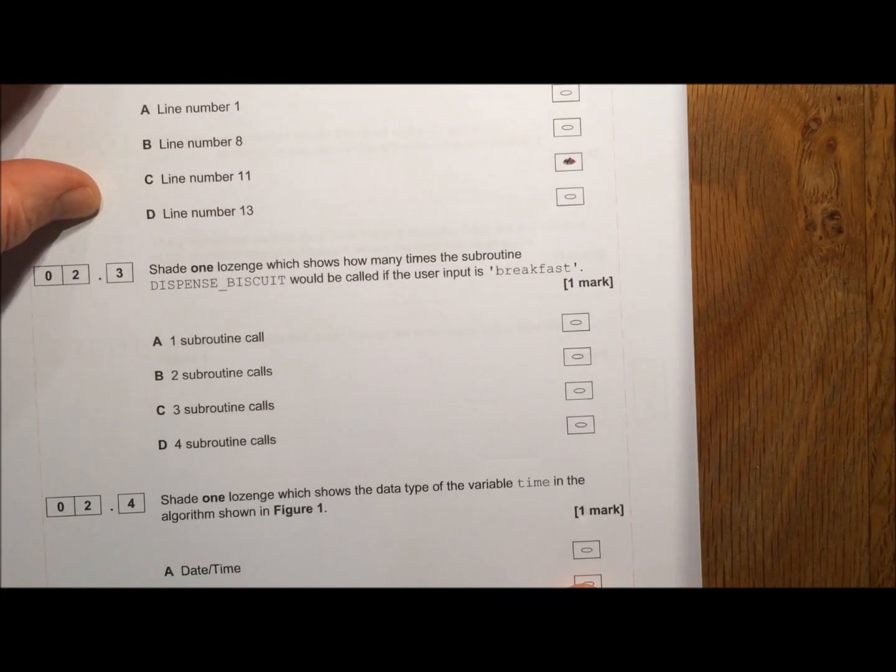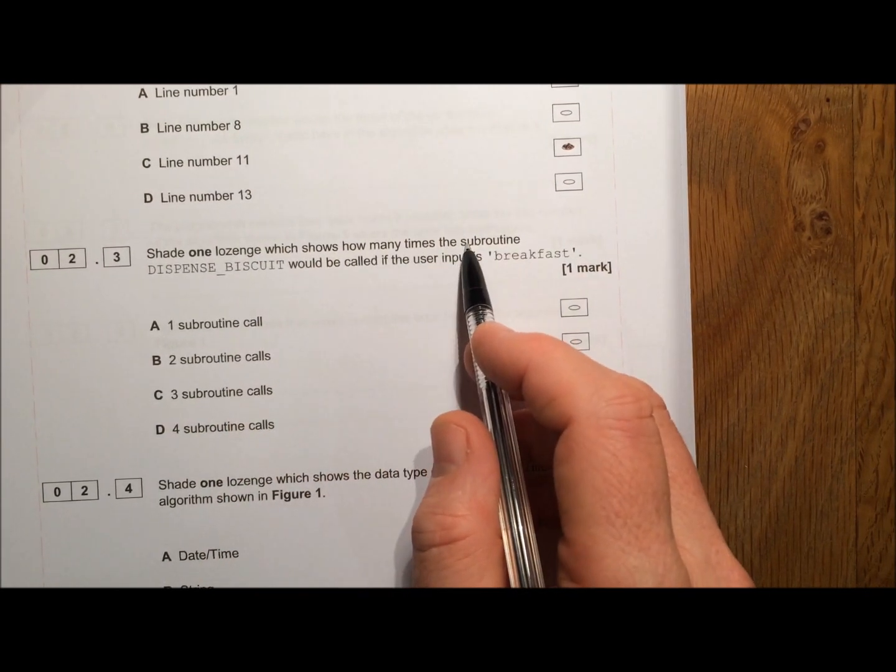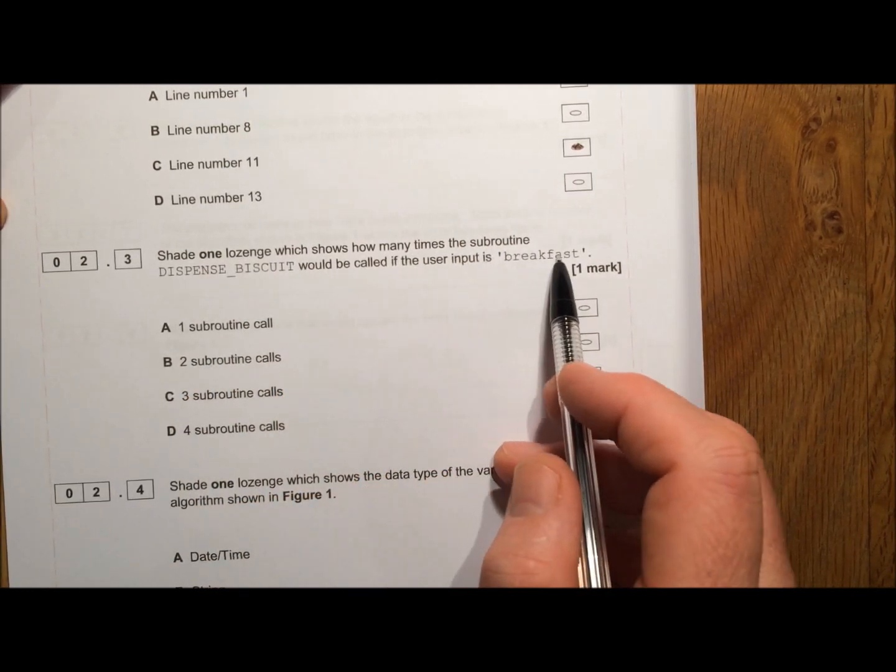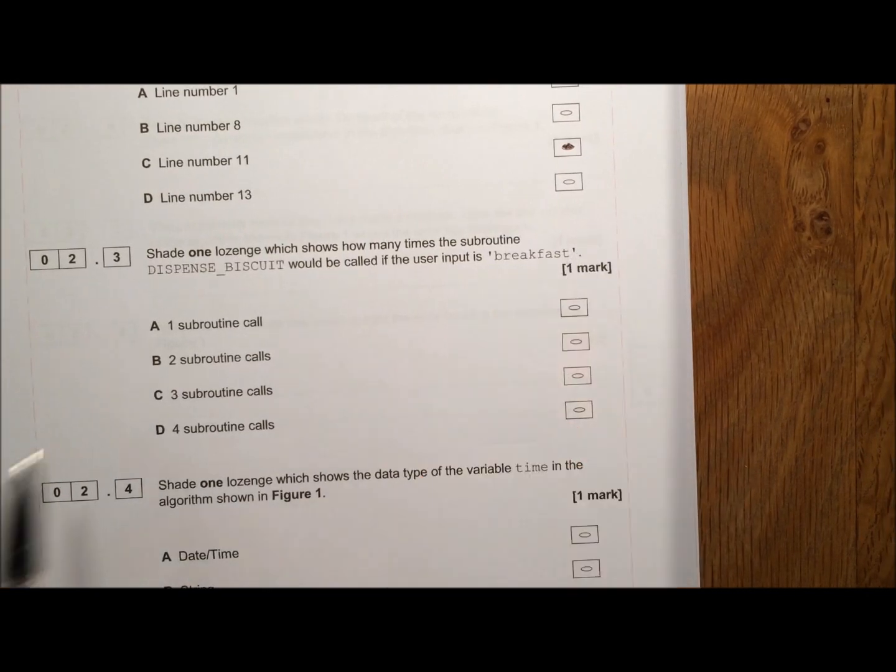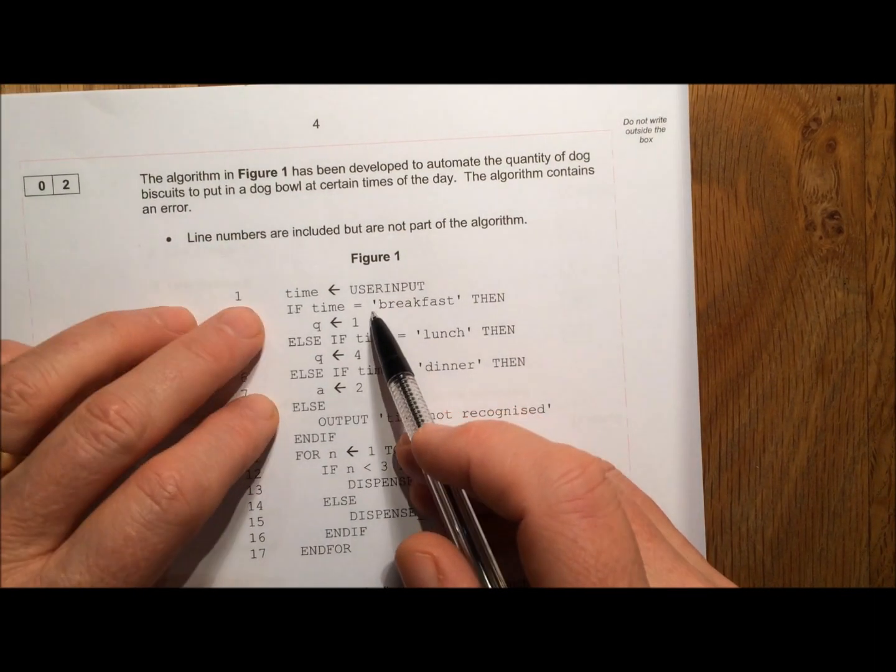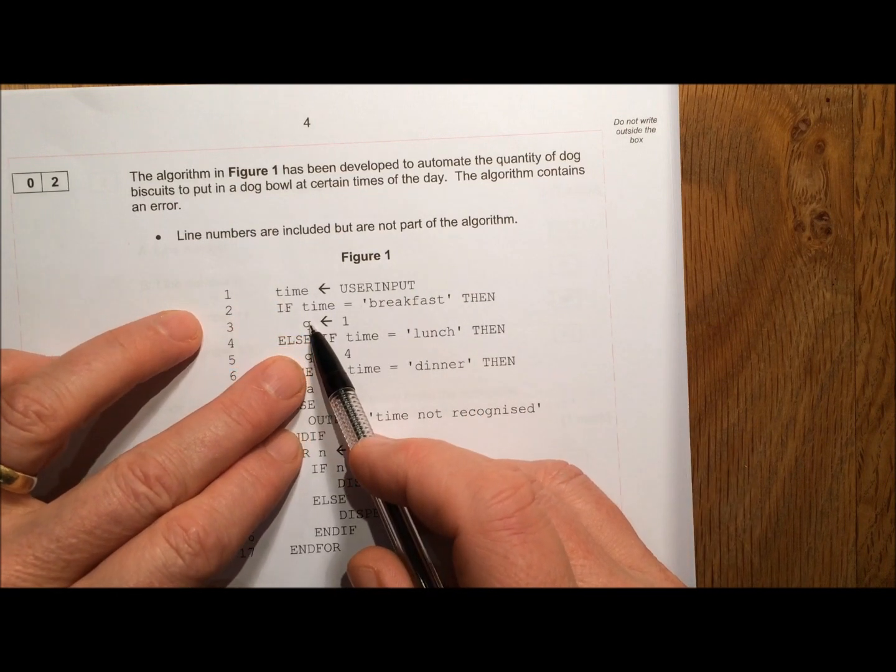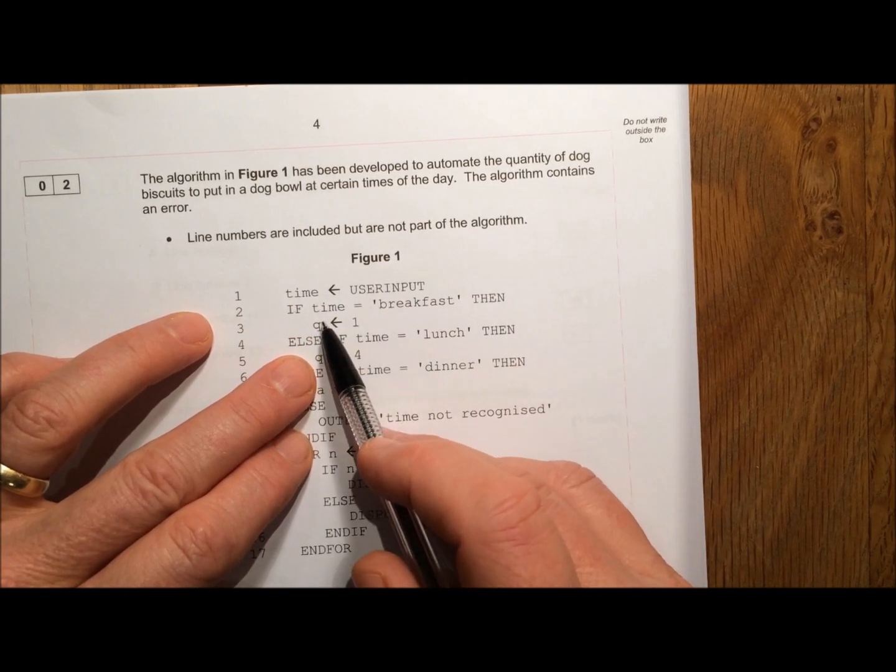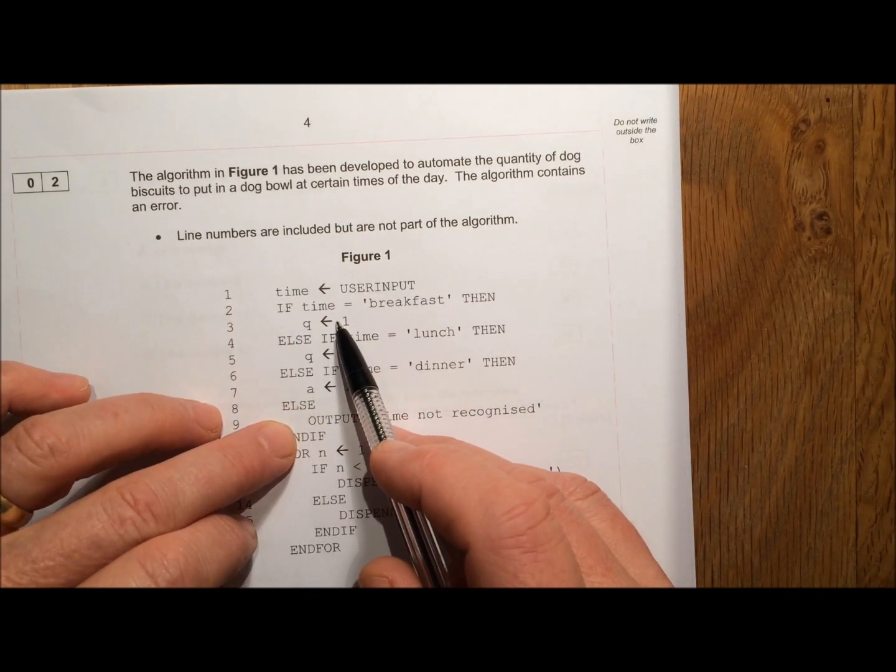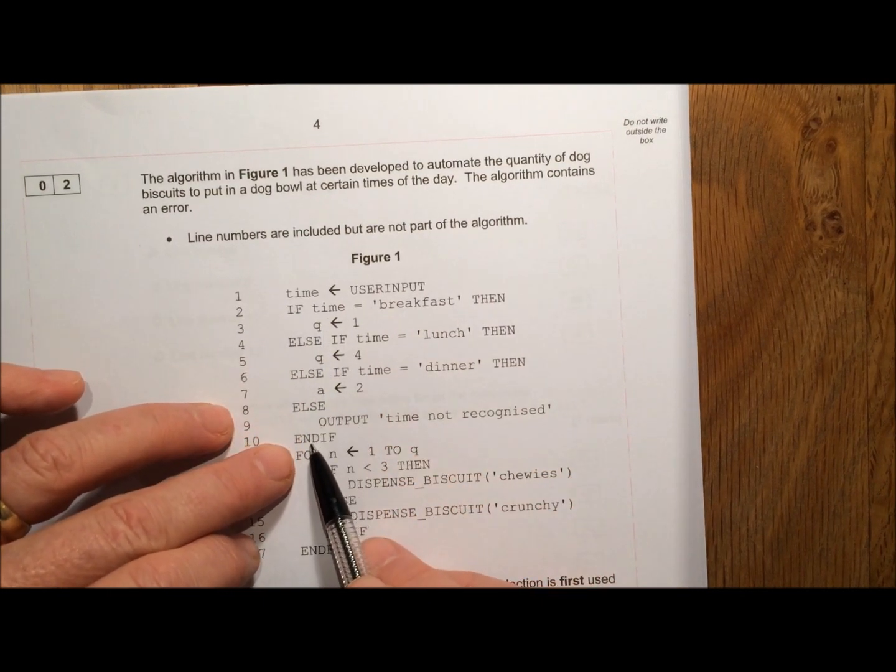Next question. Shade one lozenge which shows how many times the subroutine dispense biscuit would be called if the user input is breakfast. Let's go back to the algorithm. If the time equals breakfast then Q is assigned the value 1. So Q is now got the value 1. None of this then needs to apply because we've already found out that time equals breakfast. So Q now has the value 1 when we get to the end here.